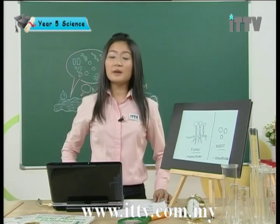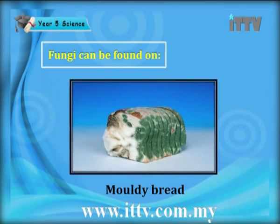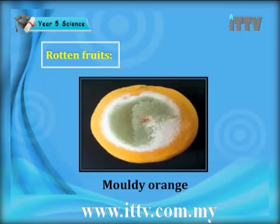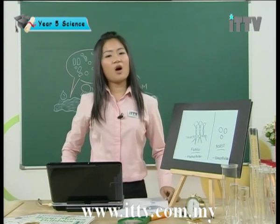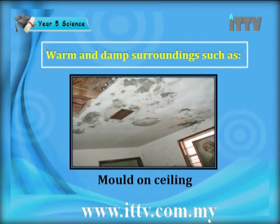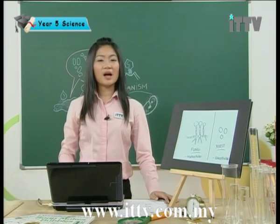Fungi can be found on trees and on forest floors. Not forgetting mouldy bread, and they also cause the spoilage of fruits — here is an example of a mouldy orange. Fungi favourably exist in warm and damp surroundings. You may see mould on ceilings — sometimes there are black or green spots on your ceiling, which are moulds or fungi growing there. Mould can also be found on walls, especially in the toilet, where you may see black dots — they are fungi.